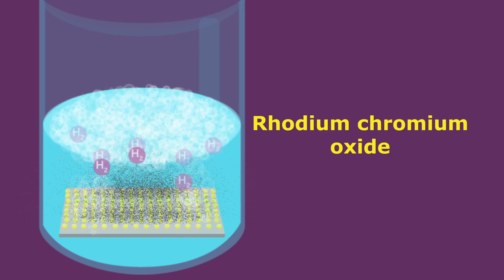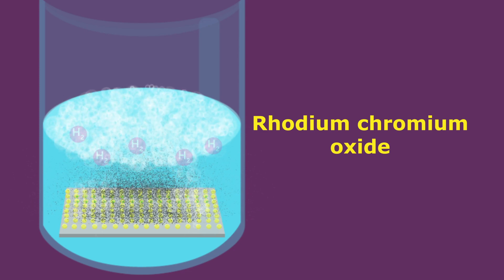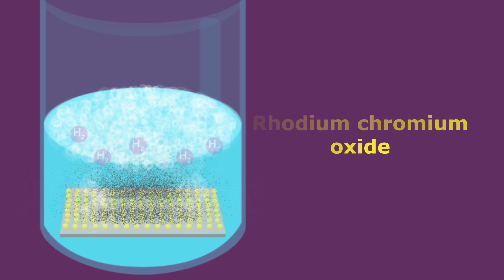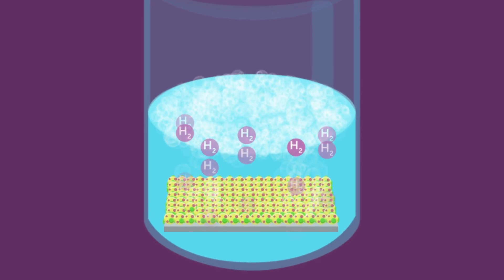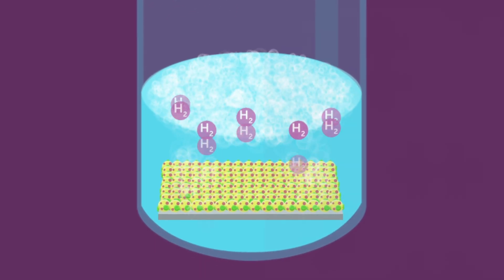To prevent the holes from oxidizing and degrading the rhodium-chromium oxide, the authors added cobalt oxyhydroxide, which promoted the stable oxidation of water.